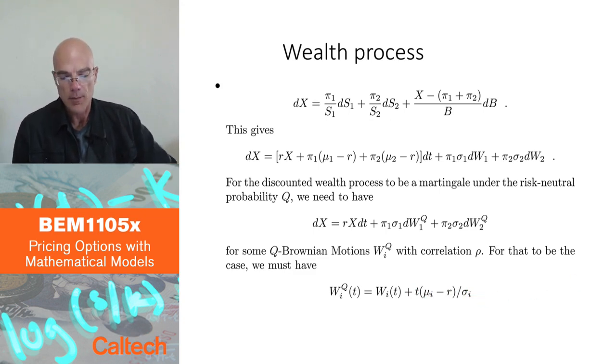we need to have this WiQ is Wi plus t times mu i minus R over sigma i. Which is the same formula we had before, how to change the Brownian motion to something which would be Brownian motion under the pricing probability. The same formula, Brownian motion plus the sharp ratio times t.